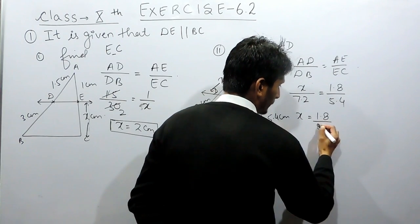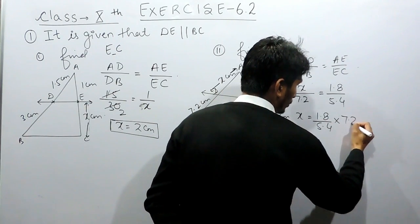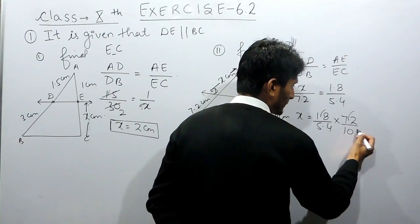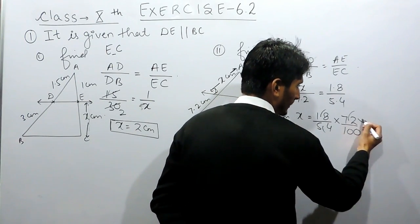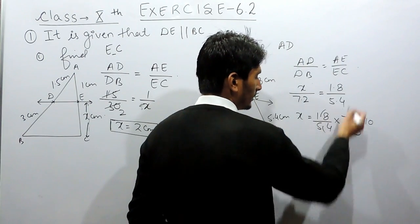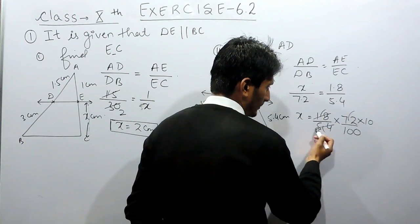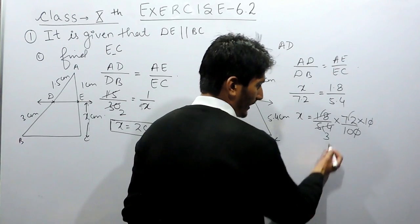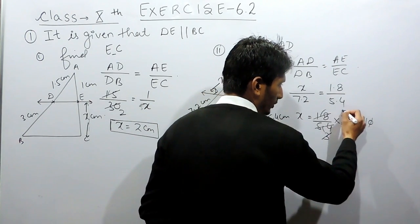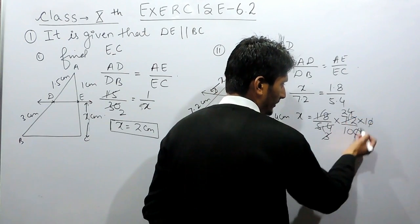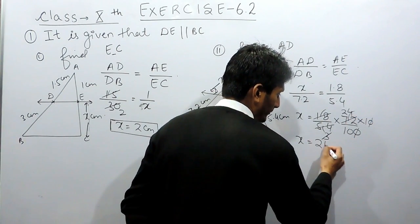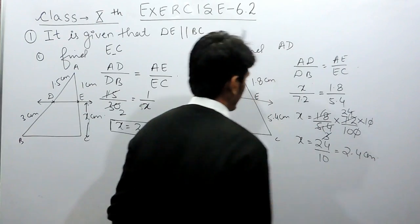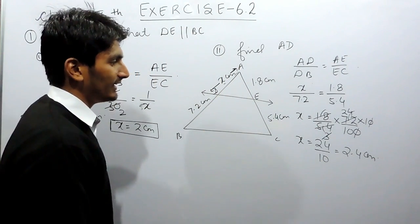Cross-multiplying gives X equals 1.8 over 5.4 multiplied by 7.2. Replacing the decimals and cancelling zeros and common factors — 3 can be cancelled with 3, giving 3 fours are 12 — the value of X equals 24 over 10, which is 2.4 centimeters. So the value of AD is 2.4 centimeters.